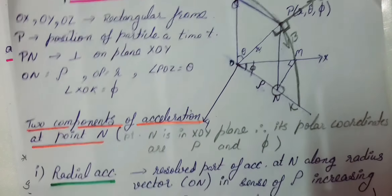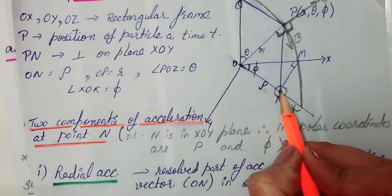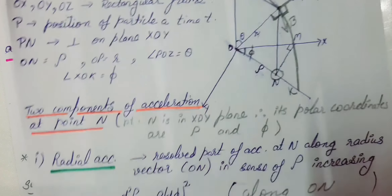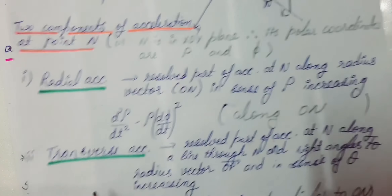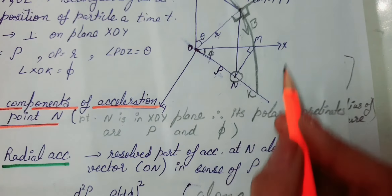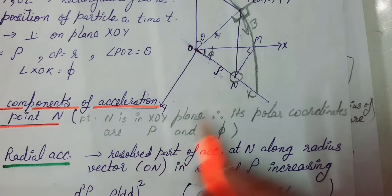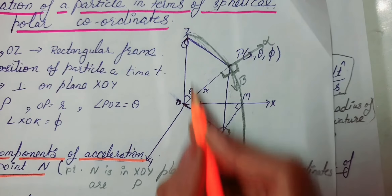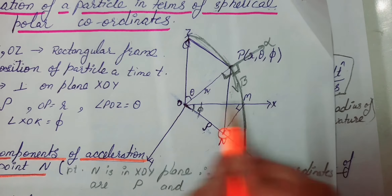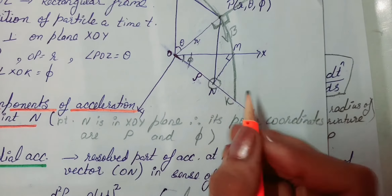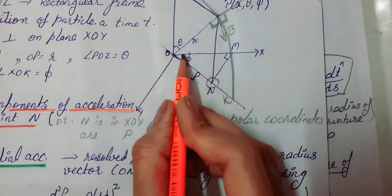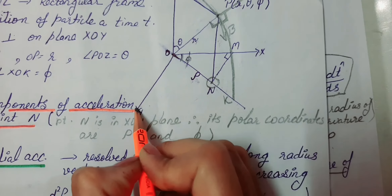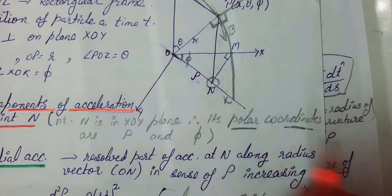Point N पे acceleration के दो components देखते हैं: radial और transverse acceleration। Point N, X-O-Y plane पे है, तो X-O-Y plane में इसके polar coordinates क्या हैं? ρ और φ। Radial acceleration की definition: resultant part of acceleration at any point along radius vector, in sense of r increasing — इस case में r यानी ρ है। Radial acceleration का formula था d²r/dt² − r(dθ/dt)², जहाँ polar coordinates r, θ थे; यहाँ ρ और φ हैं, तो formula बना: d²ρ/dt² − ρ(dφ/dt)², along ON.